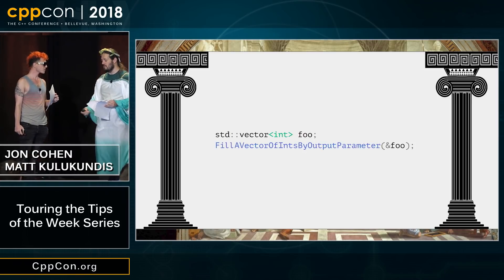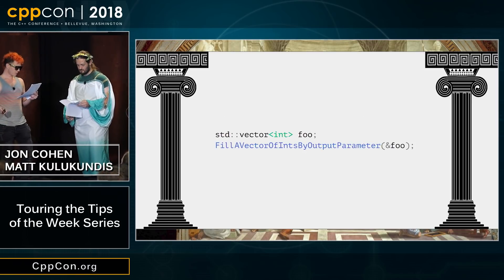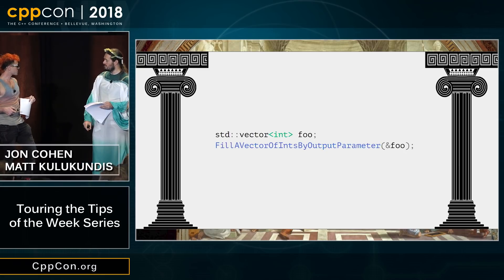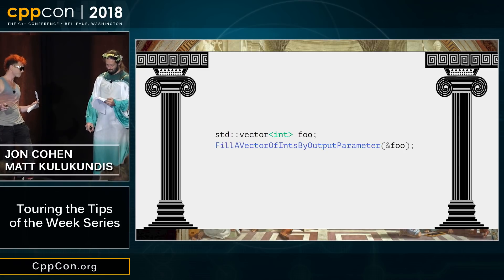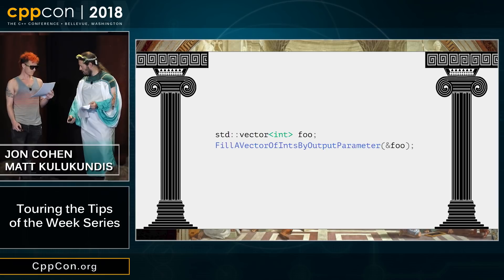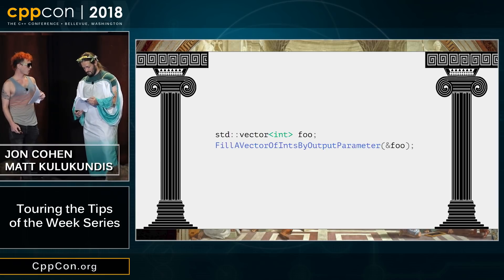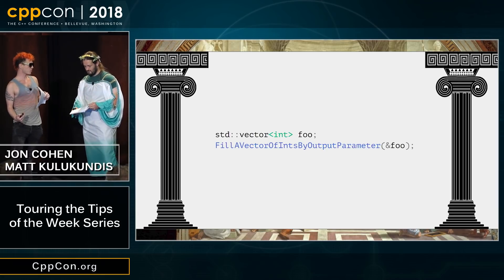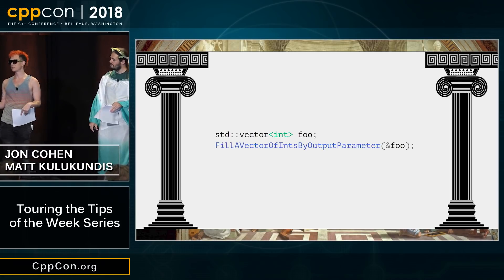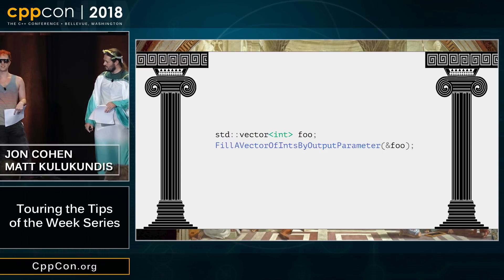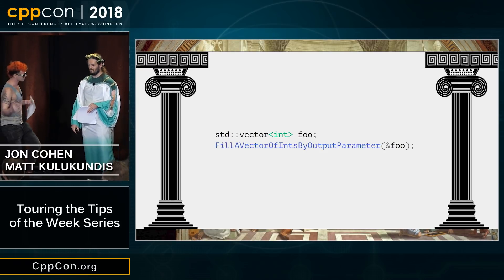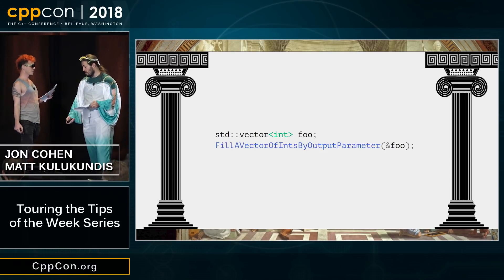Tell me about this code. Well, it makes vector events. Pretty efficient. How do you know? It does it by an output parameter, so I don't even have to think about copies or moves at all. Being intellectually lazy is awesome. Fair enough.